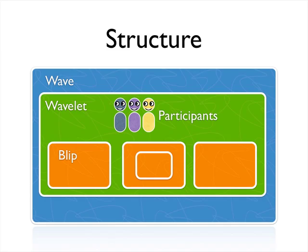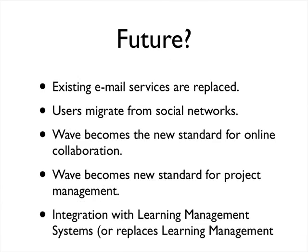So what are the ramifications? What's the future? Google Wave has just been released, and there are some things that may happen. The product may enter history as one of Google's interesting experiments, or it may take off. If Google Wave is a success, some possible outcomes are that existing email services are replaced by Google Wave, or users migrate from social networks — moving from Facebook and MySpace to start using this service, perhaps because they have greater control over their data. Wave could become the new standard for online collaboration.